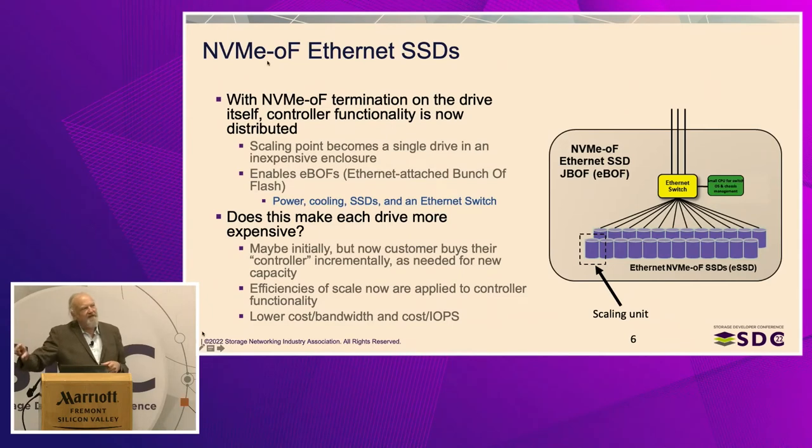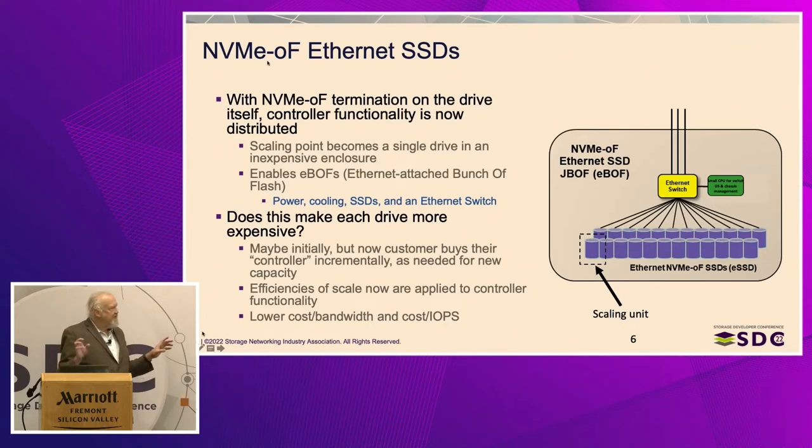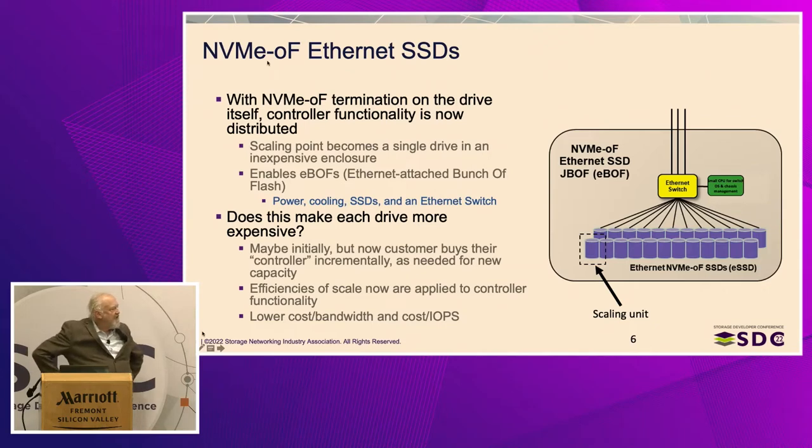This makes it more scalable. Before Ethernet drives, you had to buy a controller regardless — whether you put one, two, or ten drives behind it, you sank that cost into the controller. When you got to the tenth drive, you had to buy another controller and fill it with ten drives. With Ethernet drives, you're buying a little chunk of controller each time you buy a drive, so it scales much more cleanly at a more regular cost. Efficiencies of scale are applied to controller functionality, and it lowers the cost of bandwidth and cost of IOPS.